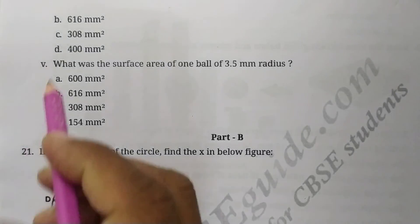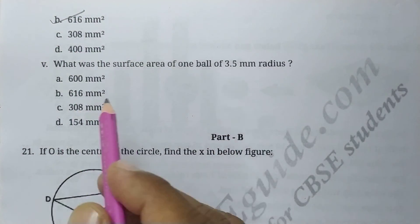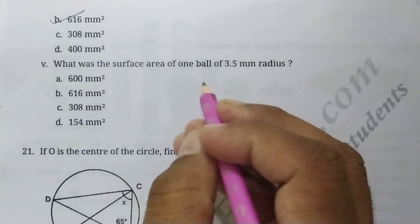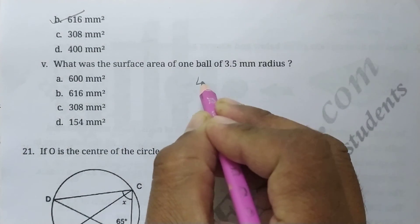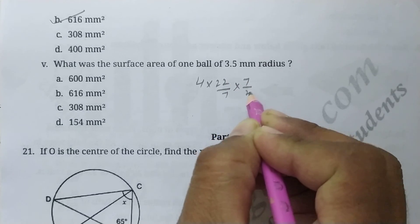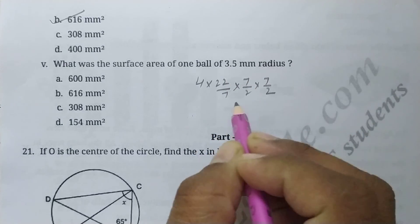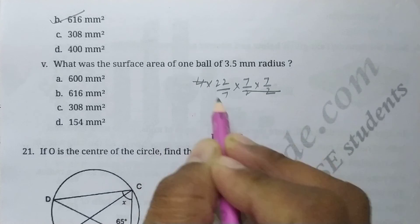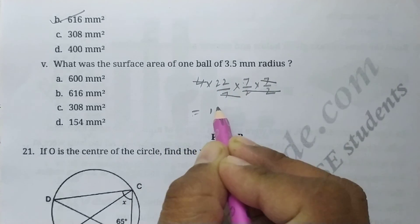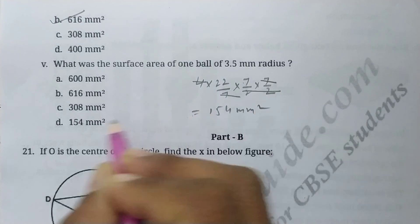What was the surface area of one ball of 3.5 mm radius? So surface area is 4 pi r square. 3.5 is 7 by 2 into 7 by 2. So 2 to the 4 is canceled with 4. 2 times 7 is 7. So 22 times 7 is 154 millimeter square. So this is the right answer.